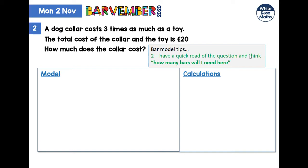Now a tip here: when you first read one of these questions, the first thing you're trying to find out is how many bars do I think I need. I think I'm going to need two here because I can see that the question or the story is about a collar and a toy.